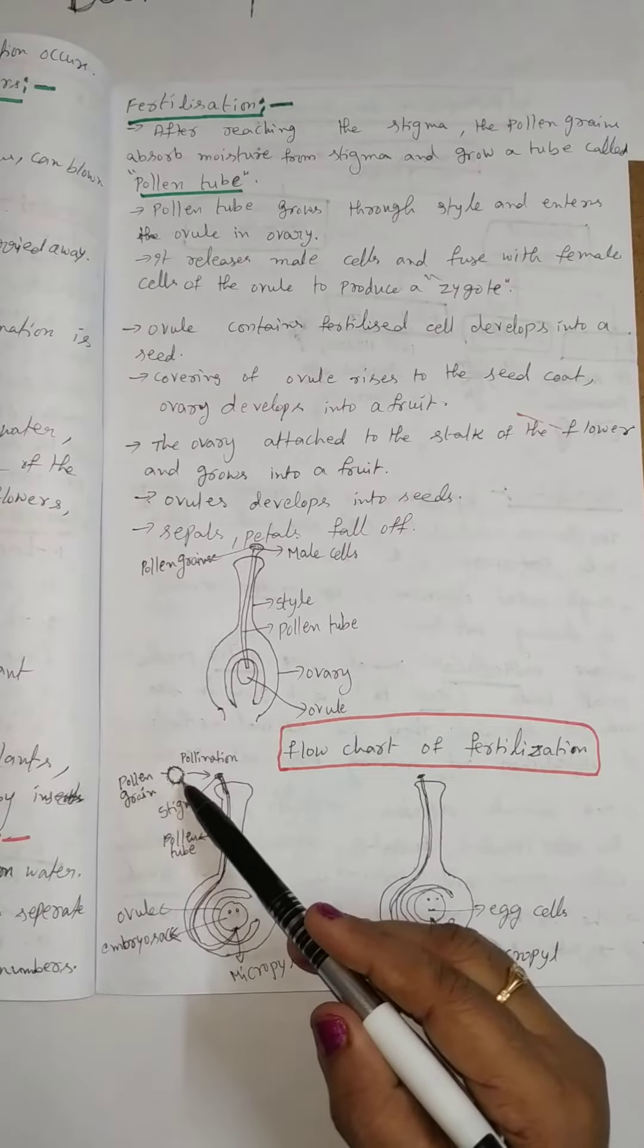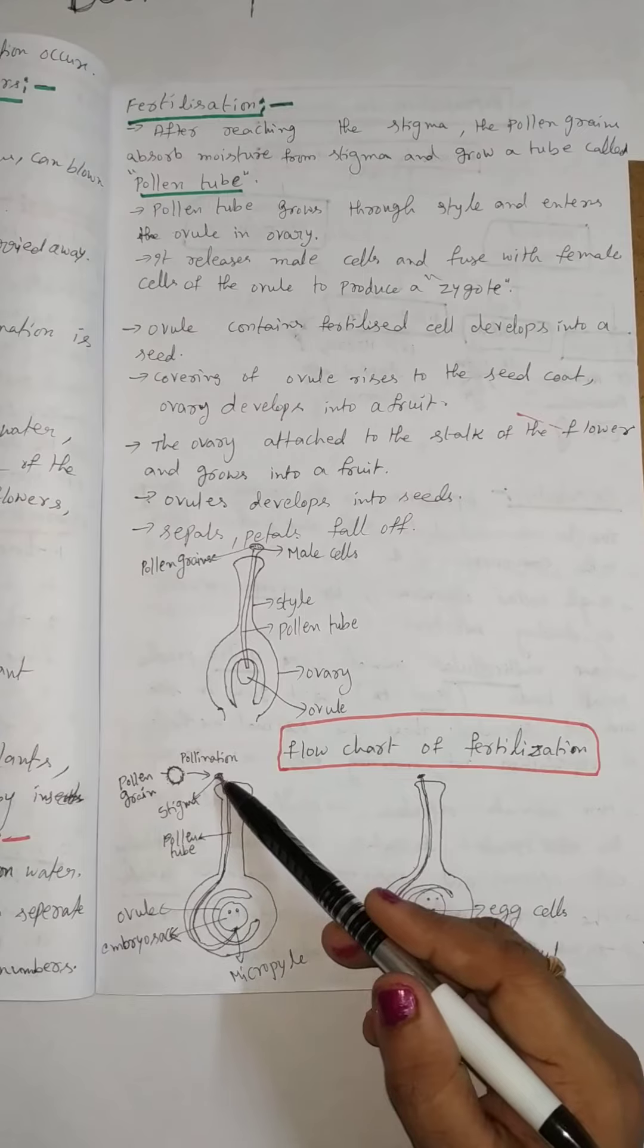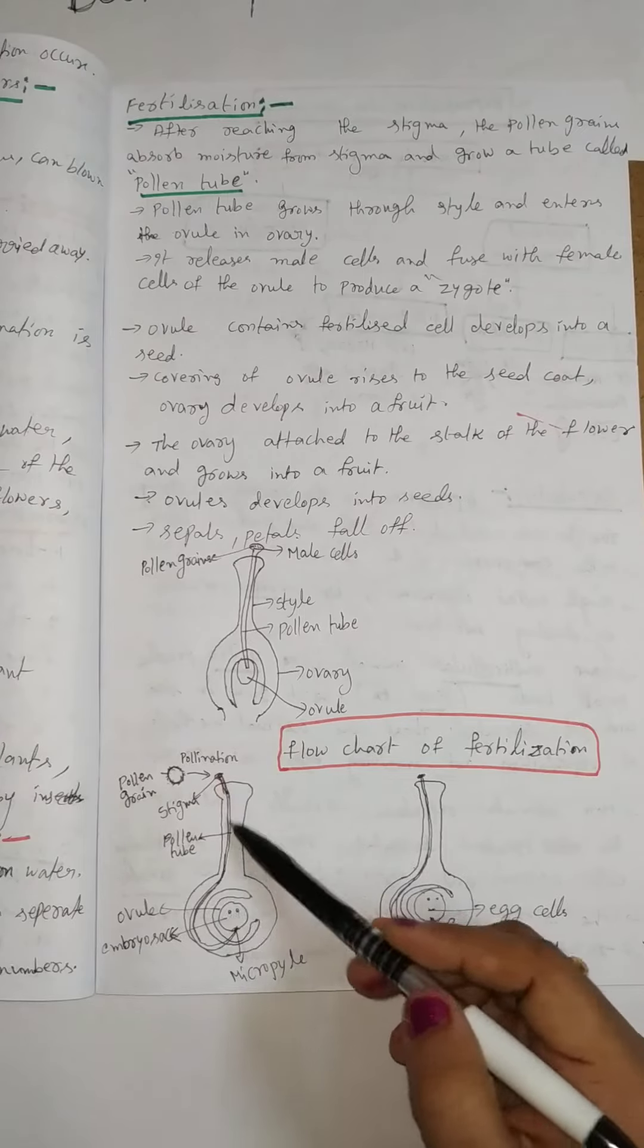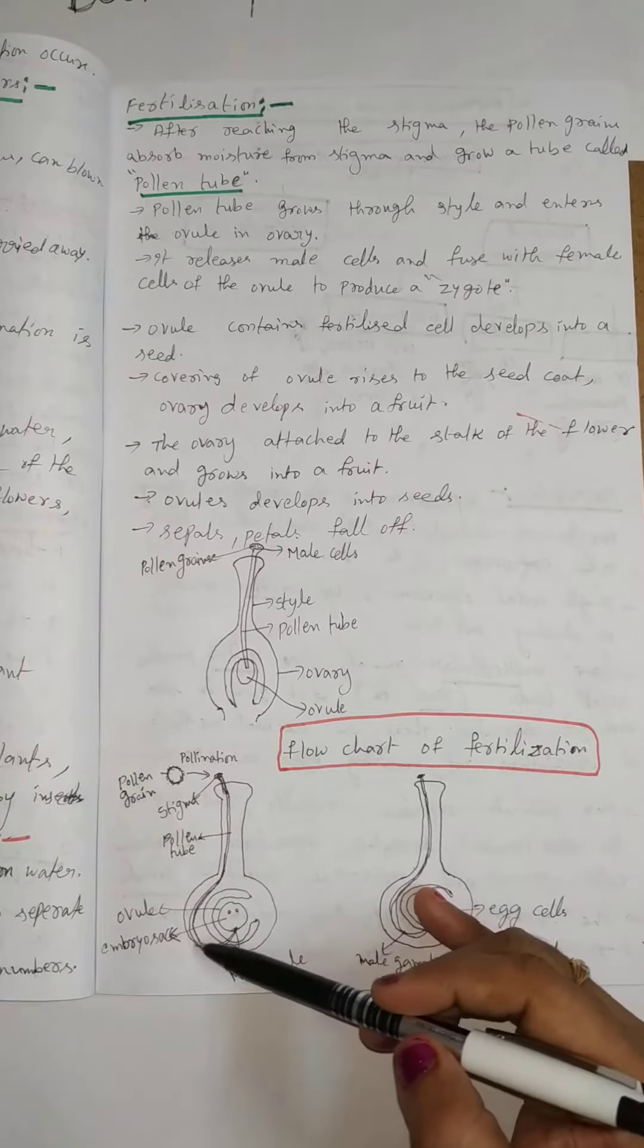When the pollen grain enters into the stigma, it forms a tube-like structure. This is called pollen tube.